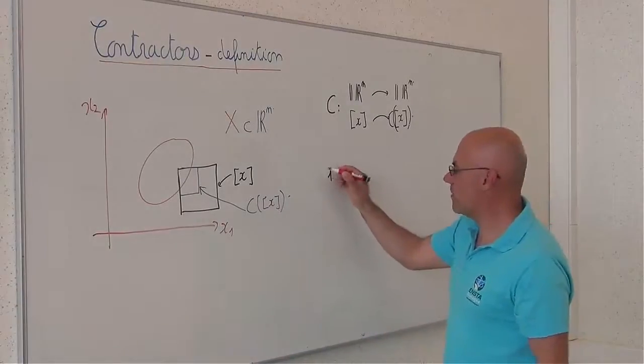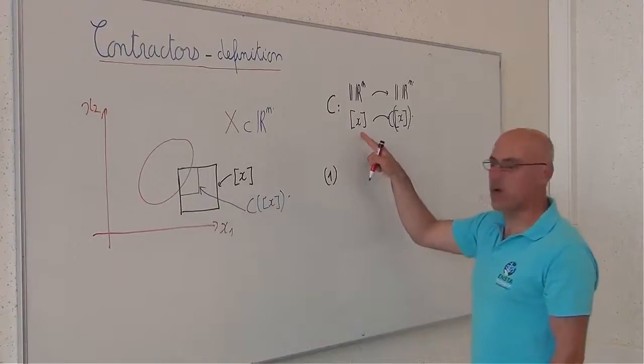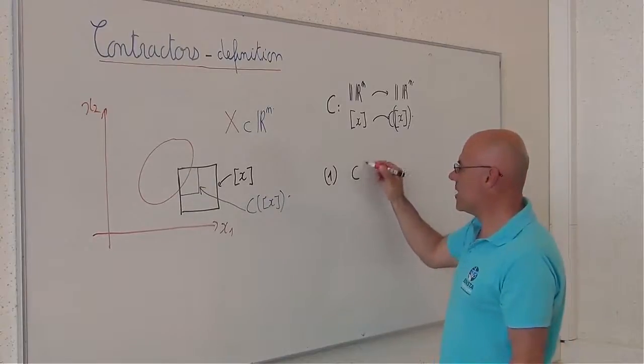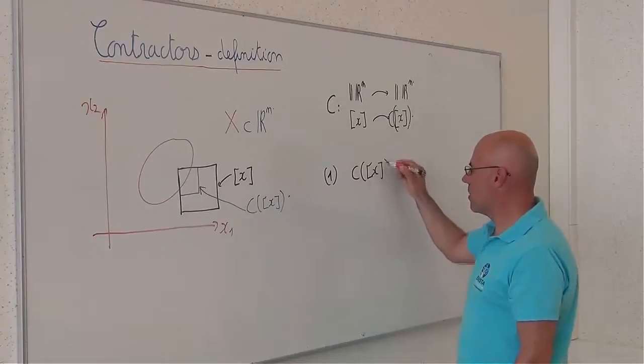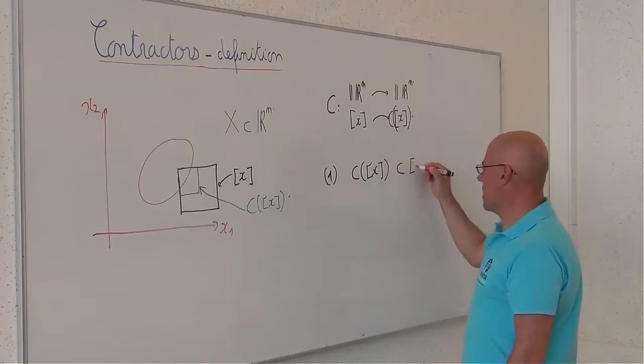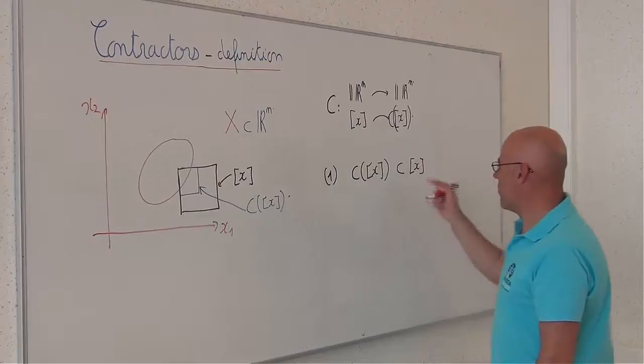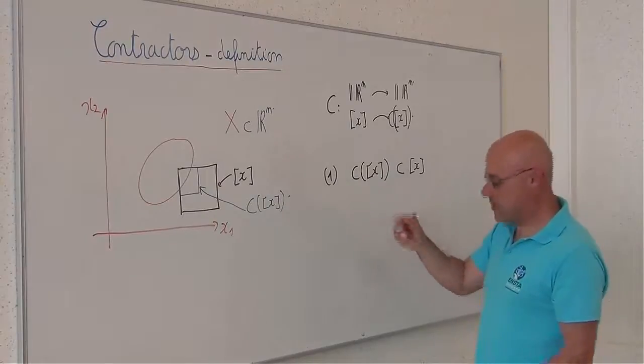The first property should be that for all box X, the image by the Contractor should be included in X. This is the Contractor's property.